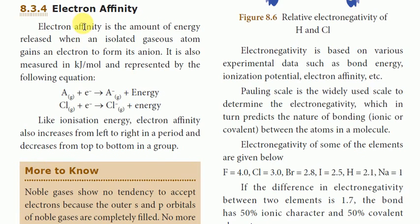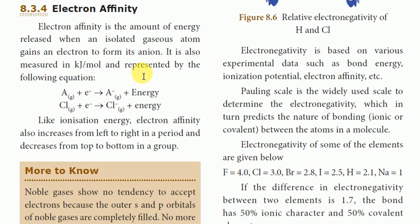The other topic is electron affinity. Electron affinity is the amount of energy released when an isolated gaseous atom gains an electron to form its anion. It is measured in kilojoule per mole and represented by the following equation.